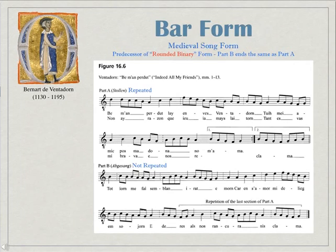The rounded binary came out of a medieval song form called the bar form. It's the predecessor of the rounded binary in that the end of the B section is the same as the end of the A section.